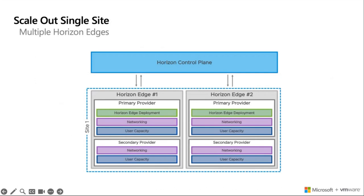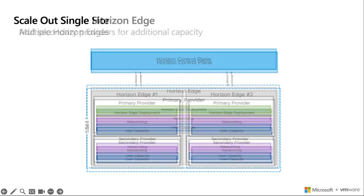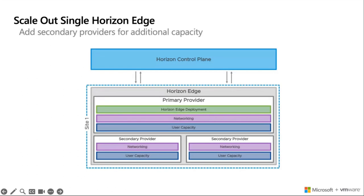You can scale out a single site using multiple edges. In this example, we see Horizon edge number one and Horizon edge number two. There's a primary provider that has the Horizon edge deployment, the networking and user capacity, and also a secondary provider that has the networking and user capacity. Another option is scaling out using a single Horizon edge but adding secondary providers for additional capacity. With this example, we have one single Horizon edge, a primary provider with the Horizon edge deployment, networking, and user capacity, and then two secondary providers. The secondary provider, in the same or different Azure subscription, is added to provide extra user capacity to a Horizon edge.